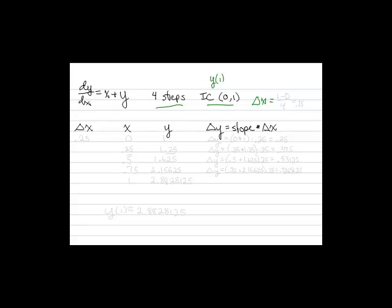Delta x is going to be the length that we're going. We're going from 0 to 1, so 1 minus 0 over the number of steps, which gives us 1/4, or 0.25. That will be our delta x through the whole problem.